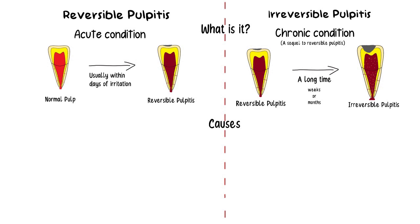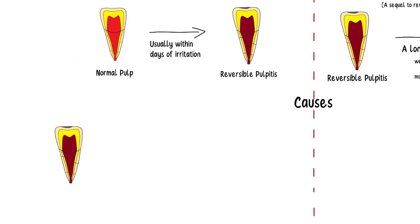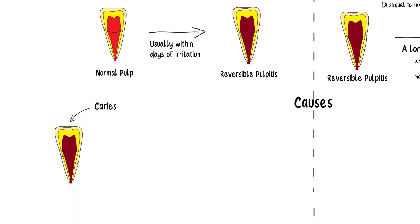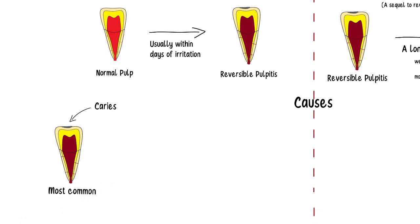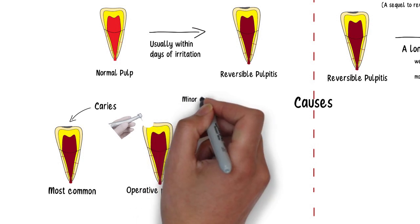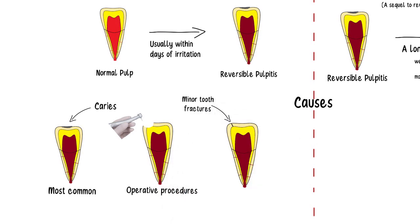Causes of reversible pulpitis include minor irritation to the pulp such as caries in the pits and fissures, small caries lesions that aren't progressing for a very long time. Caries is indeed the most common cause. Reversible pulpitis can also be elicited by operative procedures such as deep curettage or simple cavity preparations, and also by tooth fractures confined to enamel that don't propagate to dentine.